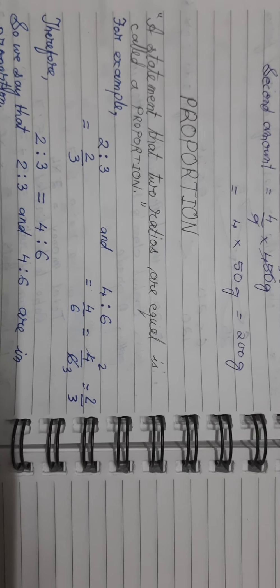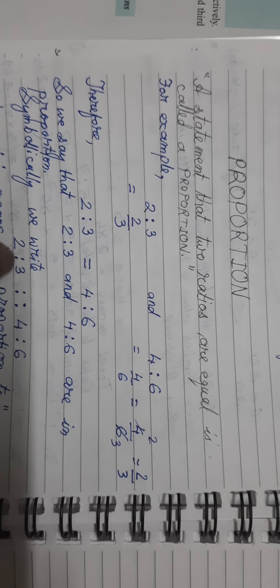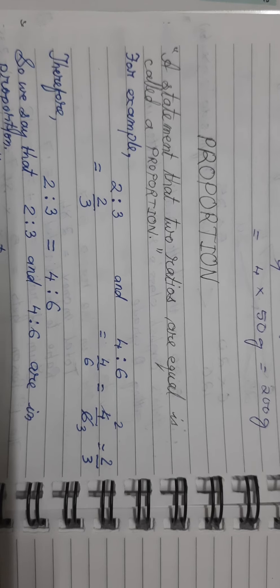So 2 is to 3 and 4 is to 6 are equal, and we can say that these two ratios are in proportion to each other. Symbolically, we write 2 is to 3 followed by four dots, which means 'is proportion to', so 2 is to 3 is proportion to 4 is to 6. We say that two ratios are in proportion when both the ratios, on solving, are found to have equal value.